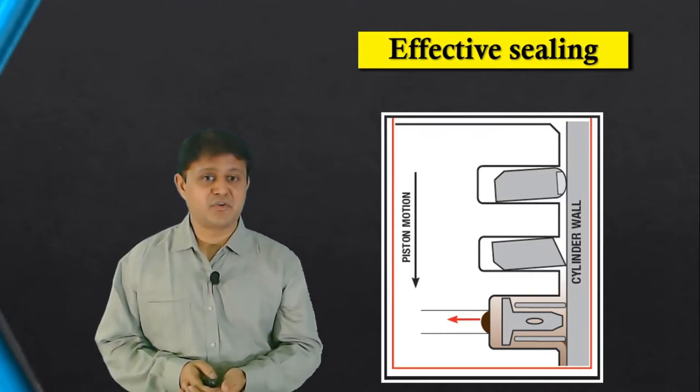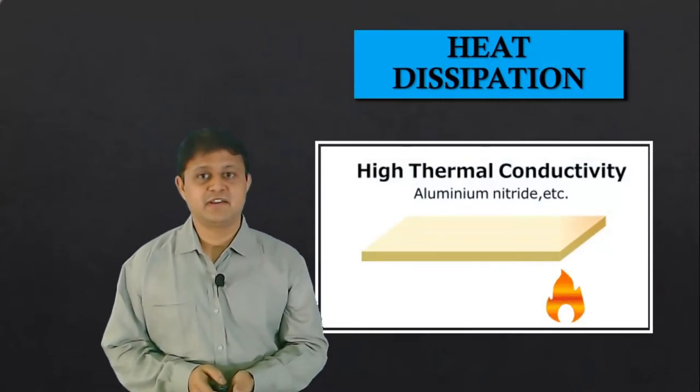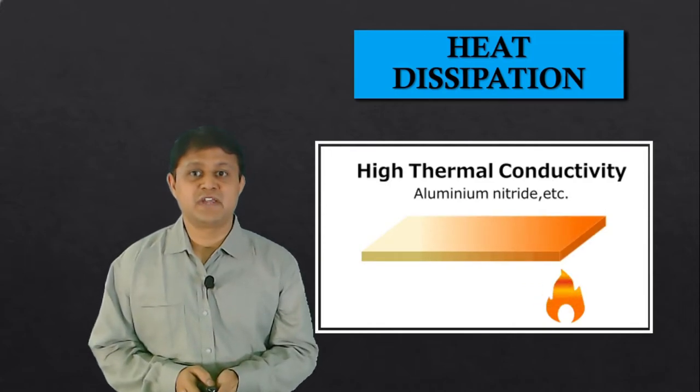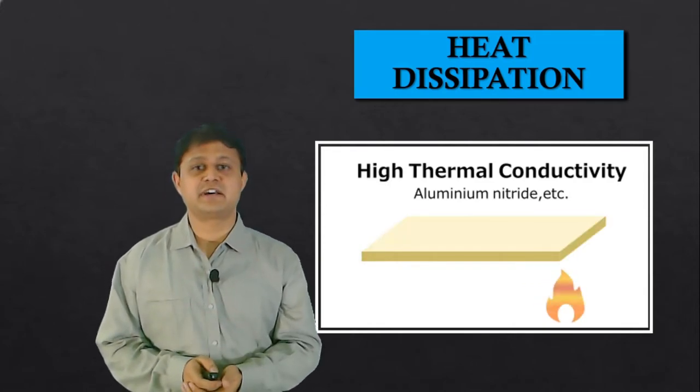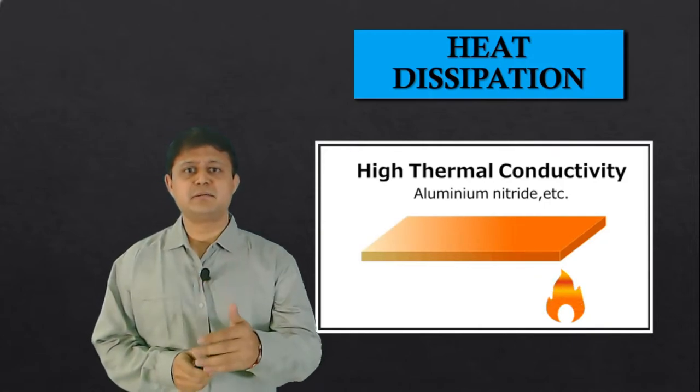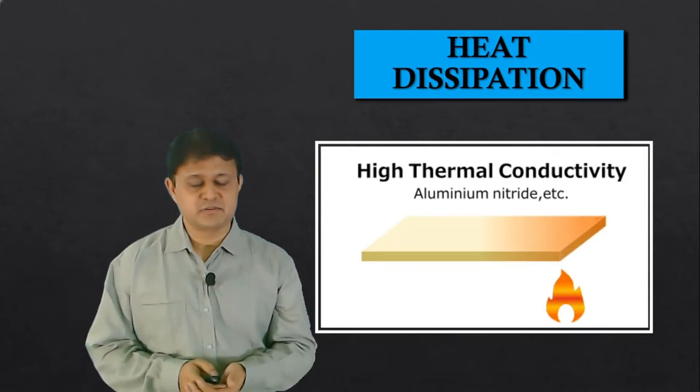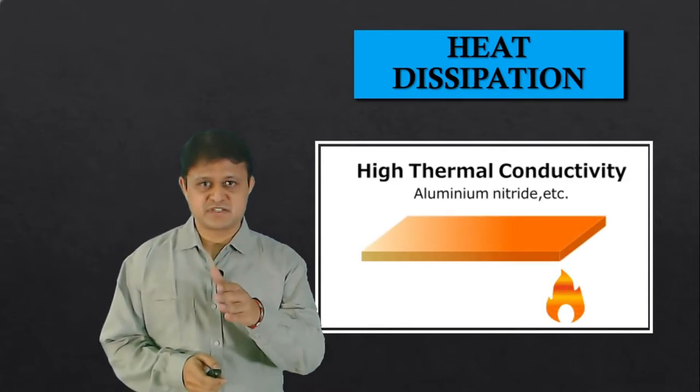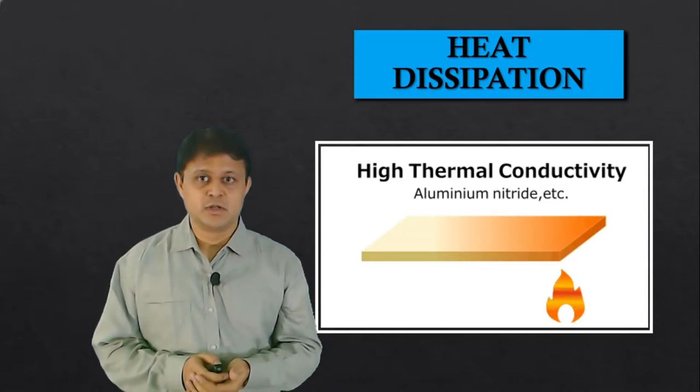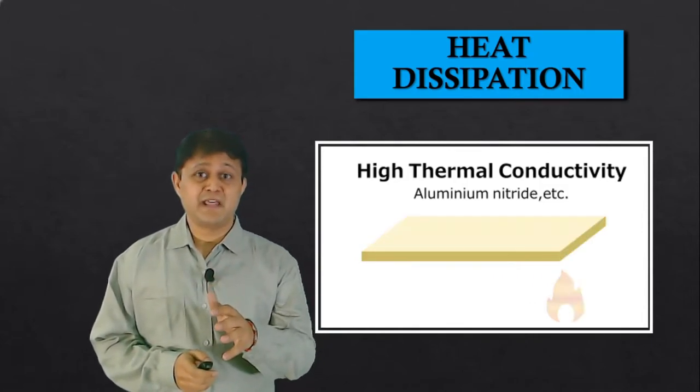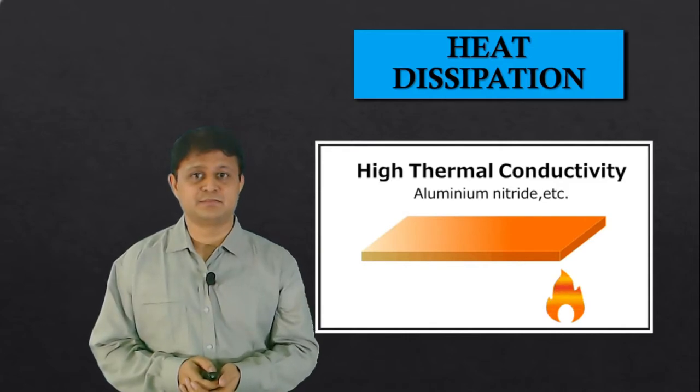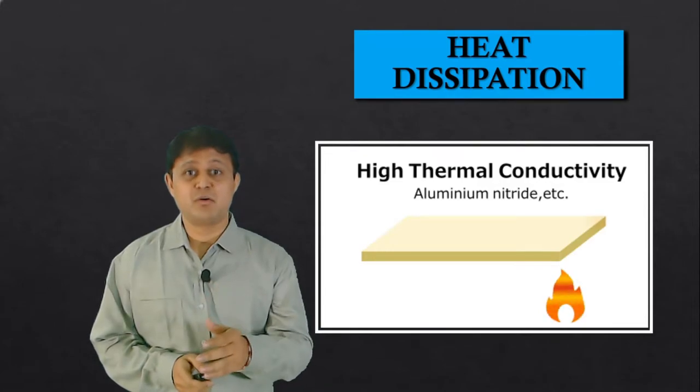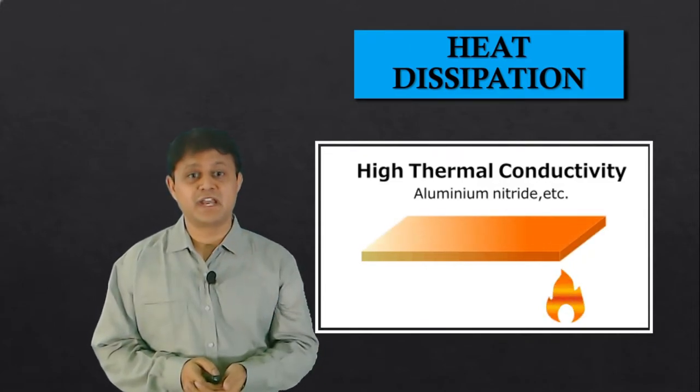The fourth one is heat dissipation. In order to maintain working temperature of the engine, the heat generated due to combustion must be dissipated as quickly as possible. Heat flow in engine is generally from the piston to cylinder wall to coolant. So piston plays a very crucial role in heat dissipation. For that, material of the piston must have high thermal conductivity.